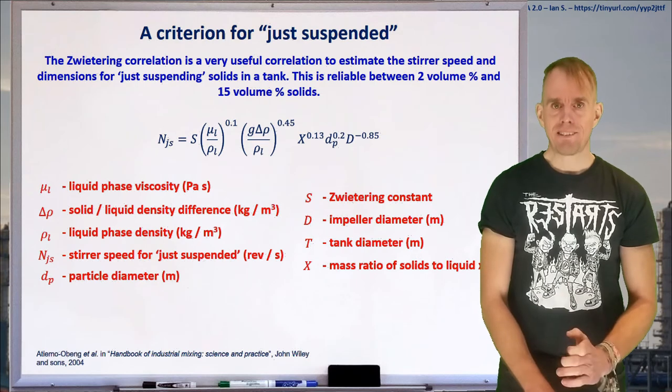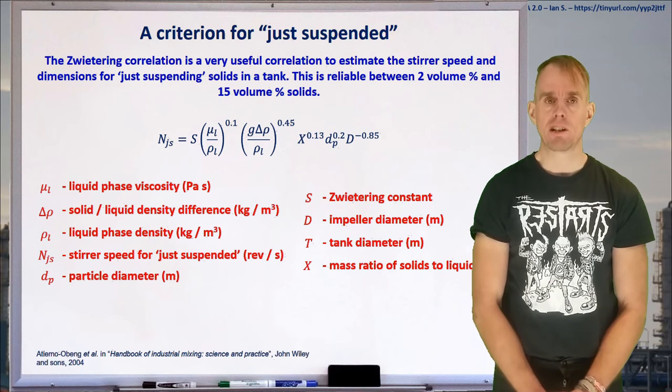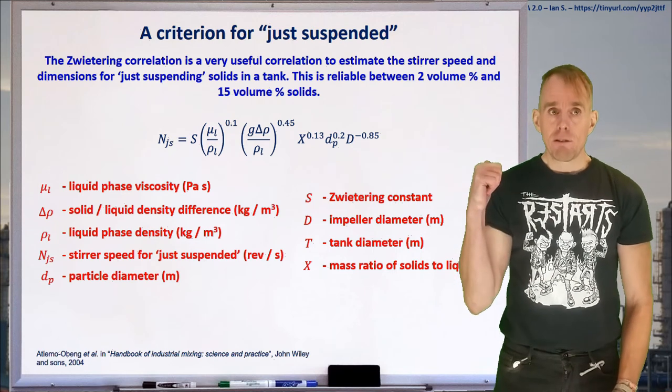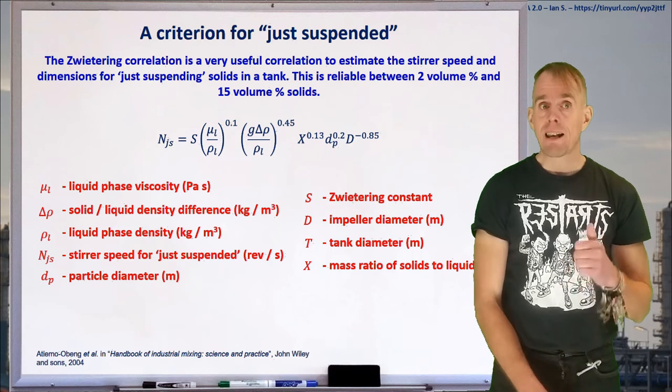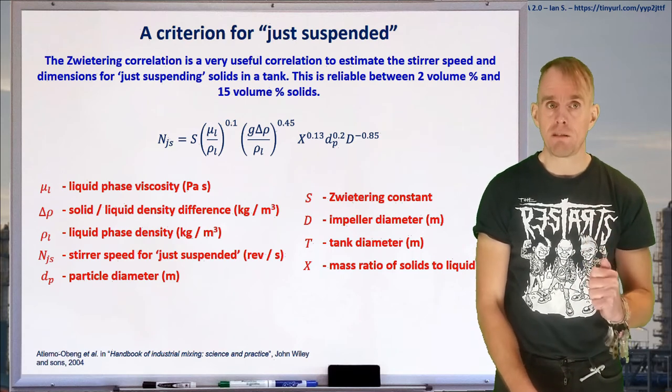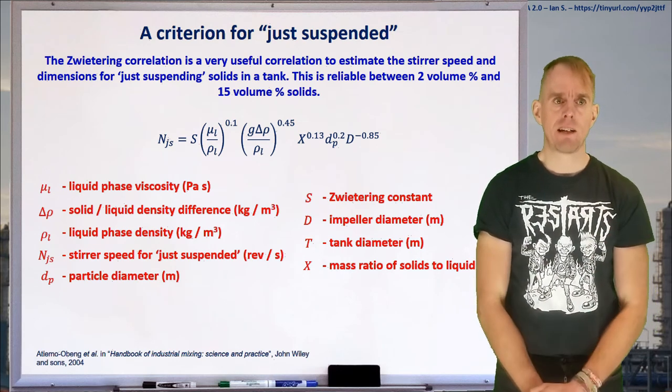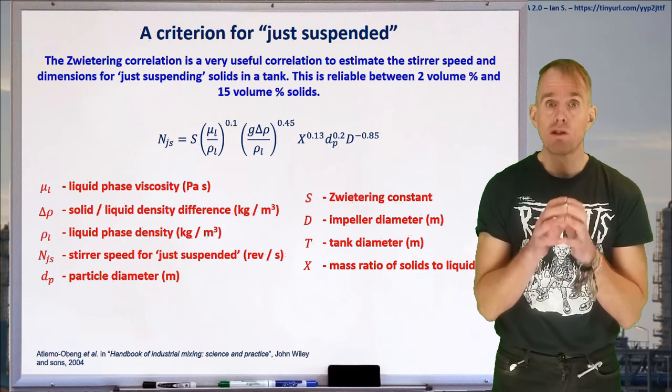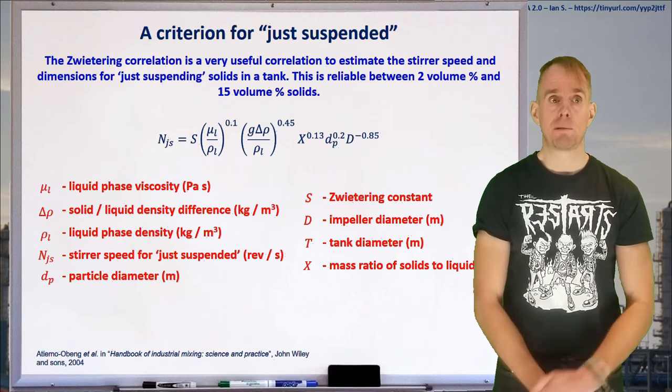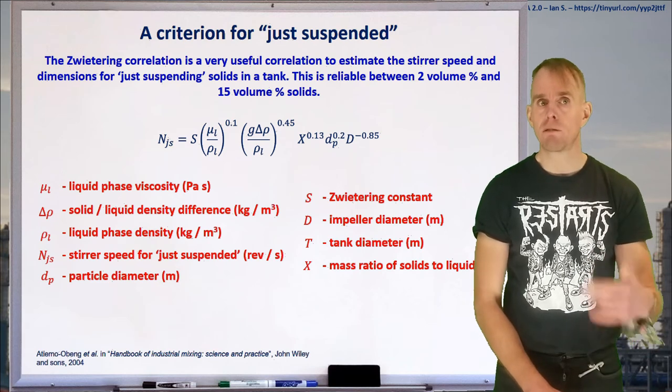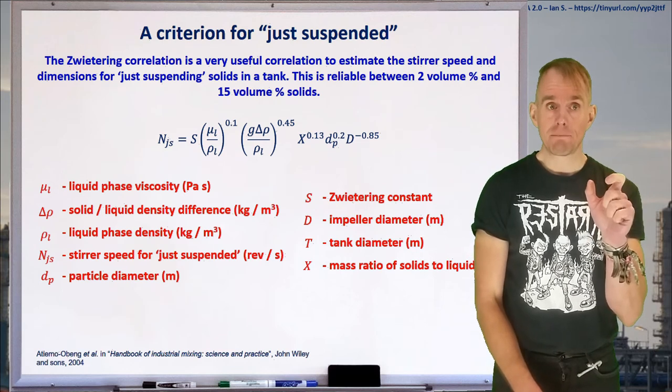Let's think now how we estimate this just suspended criterion. And we've got a correlation called the Sveterine correlation that allows us to do that. Here on the whiteboard, I have put the Sveterine correlation. It's reliable between 2 volume percent and 15 volume percent of solids, and allows you to estimate the just suspended criteria for a given stirrer geometry. Let's look at this in some detail. NJS here is your stirrer speed required for just suspension. And notice this is in revolutions per second.